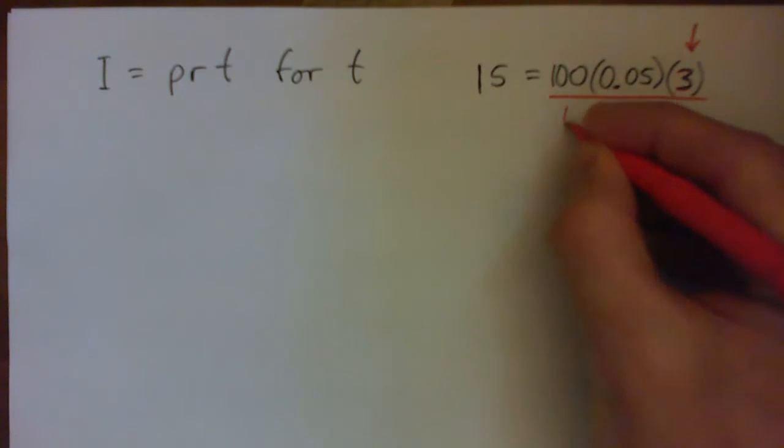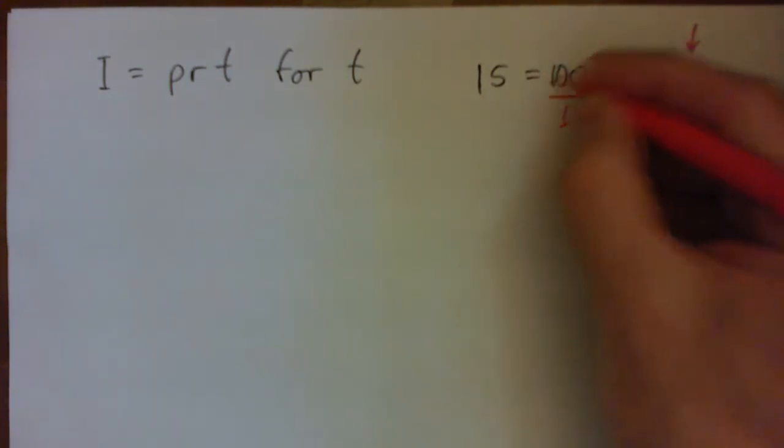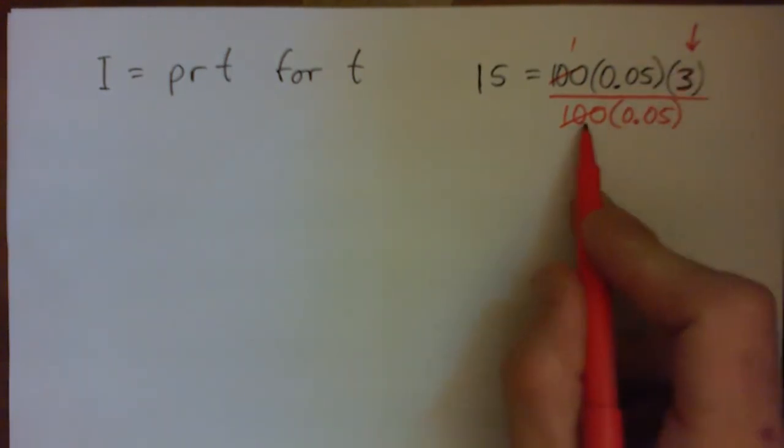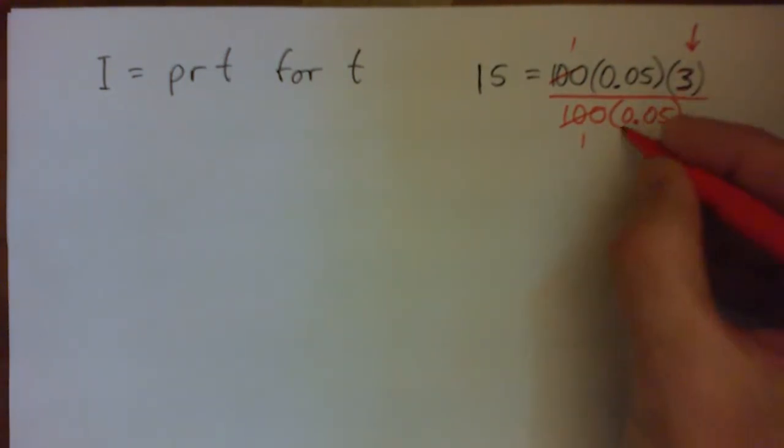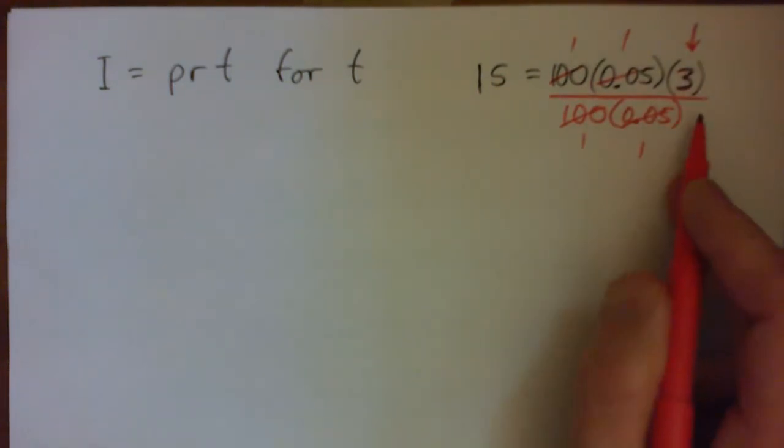Now, we can divide by, say, 100. And if I do that, these guys cross-cancel. But I can also divide by 0.05. So I can divide by that as well. So 100 times 0.05, and these guys are going to cross-cancel also. And you'll be just left with the three on the right. Does that make sense?